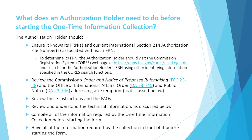What does an authorization holder need to do before starting the one-time information collection? The authorization holder should ensure it knows its FRNs and current International Section 214 authorization file numbers associated with each FRN. To determine its FRN, the authorization holder should visit the Commission Registration System CORES webpage at https://apps.fcc.gov/CORES/userLogin.do and search for the authorization holder's FRN using other identifying information specified in the CORES search functions. Review the Commission's Order and Notice of Proposed Rulemaking FCC 23-28 and the Office of International Affairs Order DA 23-745 and Public Notice DA 23-746 addressing an exemption.